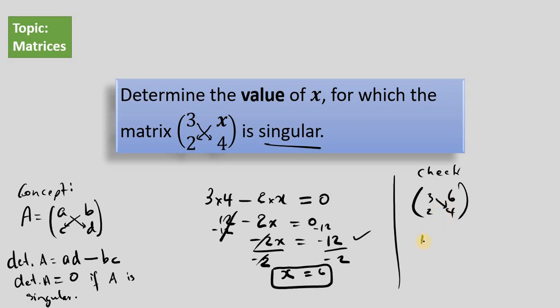3 times 4, that's 12. Then minus 6 times 2, that's 12. And 12 minus 12 is indeed 0. So the determinant of this particular matrix is equal to 0, which means it's a singular matrix.